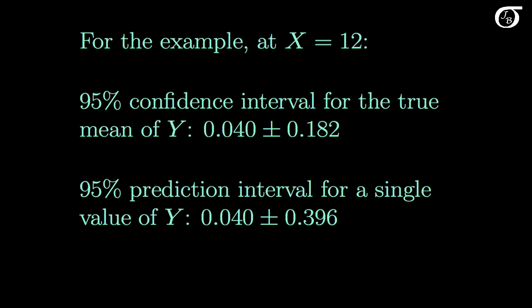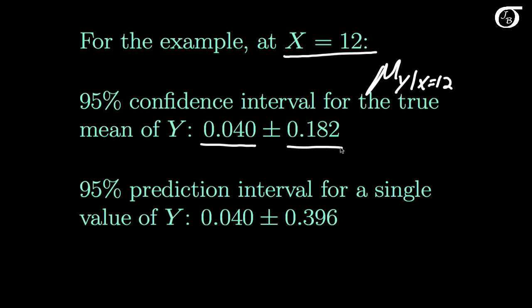Using software to calculate a confidence interval and prediction interval when x equals 12: the first result is a 95% confidence interval for the true mean of y when x equals 12 — we take our estimated mean of 0.040 plus and minus the margin of error calculated by the computer. The second is a 95% prediction interval for a single value of y — we take our predicted value plus and minus the margin of error. Note that the margin of error in the prediction interval for a single value is greater than in the confidence interval for the true mean at that point.